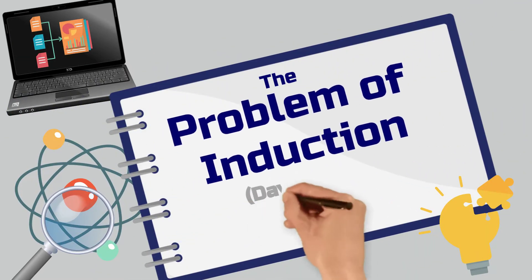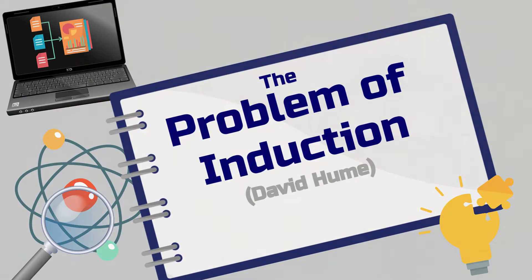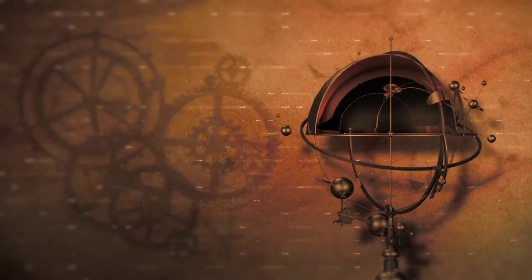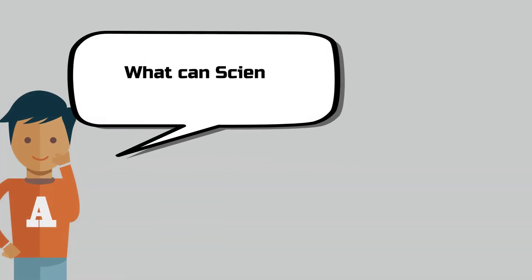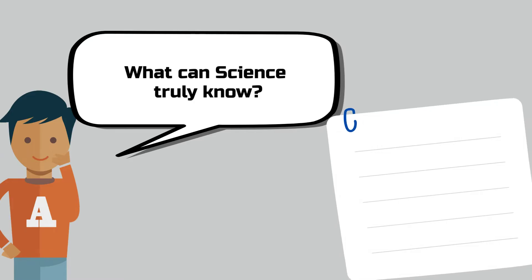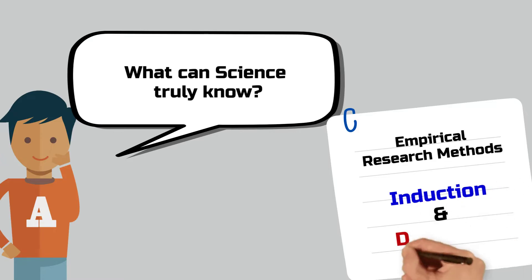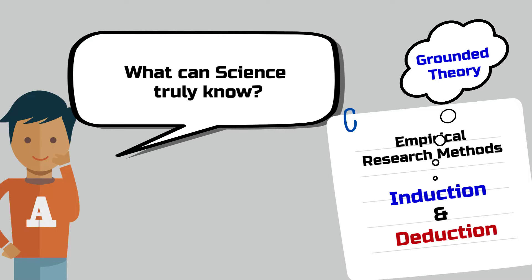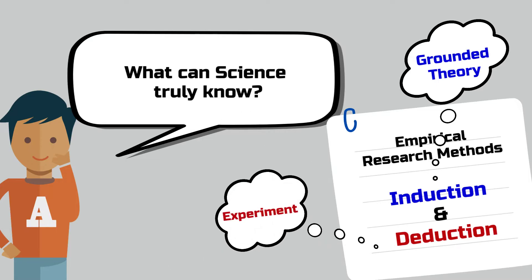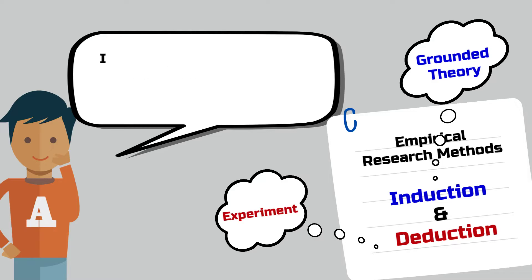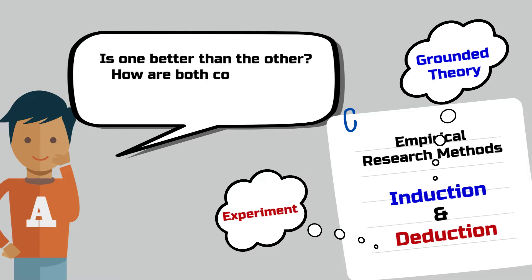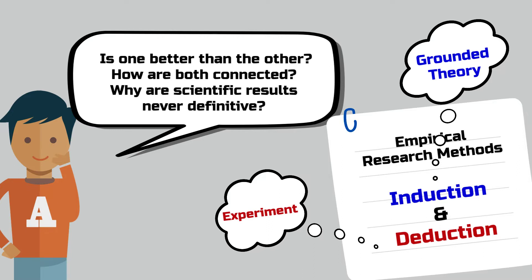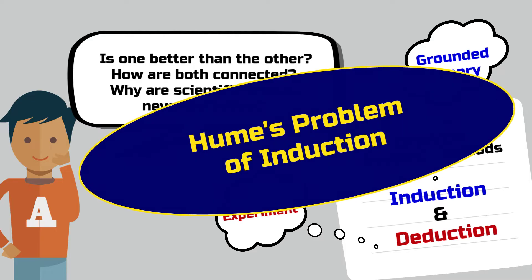The problem of induction, as formulated by David Hume, addresses one of the most significant questions in epistemology: what can science truly know? If you've ever delved into empirical research methods, you've likely encountered the terms induction and deduction. While a grounded theory approach follows an inductive logic, an experiment relies on deductive logic. The answers to whether one is better, how they're connected, and why scientific results are never definitive are all tied to Hume's problem of induction.